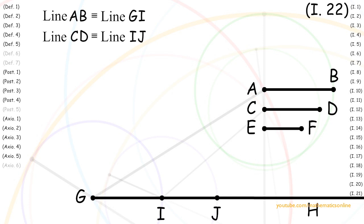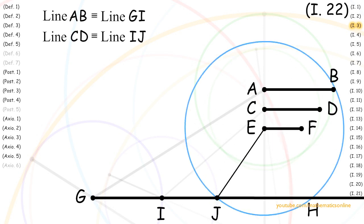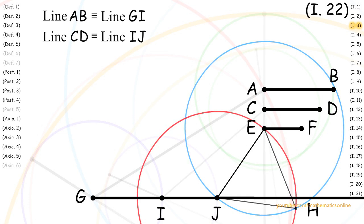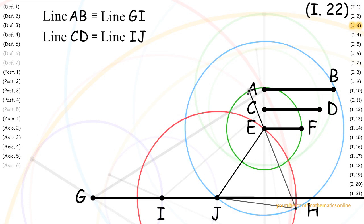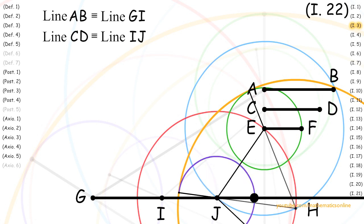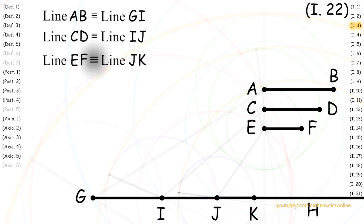Now, with line EF and line JH, we apply Proposition 3 one last time. From this, we get line EF is congruent to line JK.